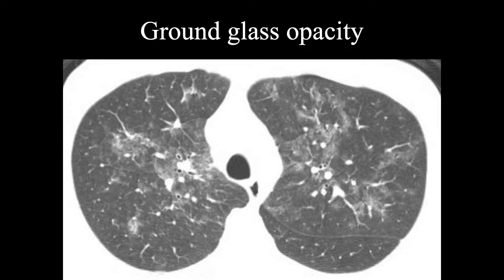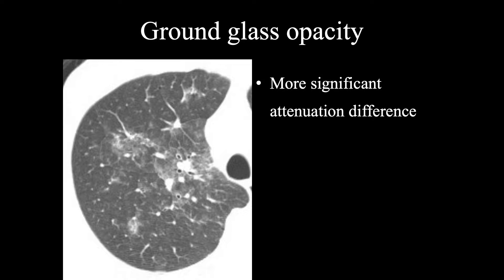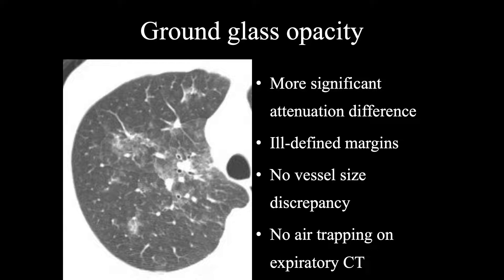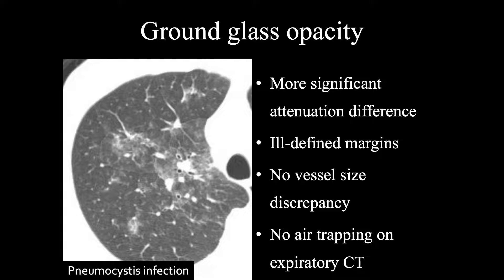This is an example of ground glass opacity, demonstrating the opposite findings. There's usually a fairly significant difference in attenuation between the abnormally opaque lung and the more normal, more lucent lung. The margins at the edges tend to be ill-defined. The vessels are not bigger or smaller in any area of lung, and if the patient has expiratory CTs, there should be no air trapping in any lung regions. This is an example of pneumocystis infection.